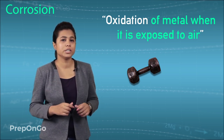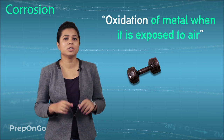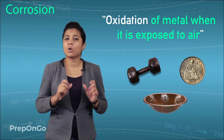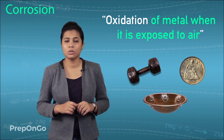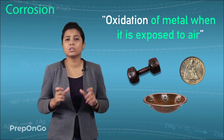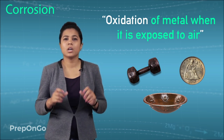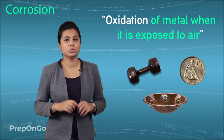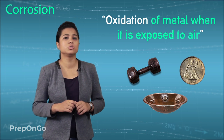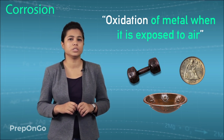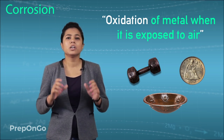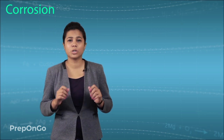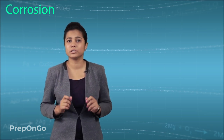You can see that oxidation of iron, silver getting a black coating, or copper getting a green coating are also examples of corrosion. This corrosion is due to the exposure of metals to oxygen. Corrosion is not good for metals because it causes wastage.